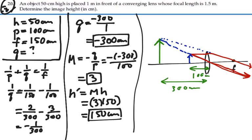Image distance is a negative 300, so it's not on the side of the outgoing rays. That makes sense. And the image is three times bigger than the object. That makes sense. And it's upright. And we have a virtual image because our image distance is negative. So all that seems to work out. And our image height is 150 centimeters.